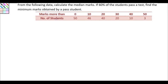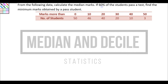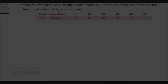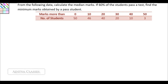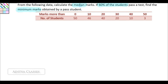Today we will see how we can solve this very simple question wherein we have been asked to find median marks and some kind of range for past students. From the following data, calculate the median marks - we need to find out median marks from this distribution. Then, if 60 percent of the students pass a test, find the minimum marks obtained by a past student. So we need to find out these two things: median and minimum marks range.